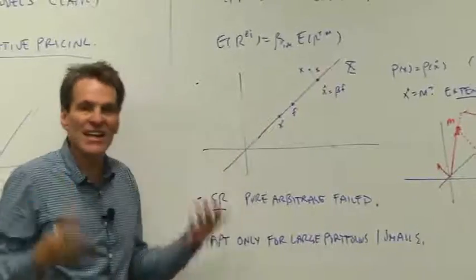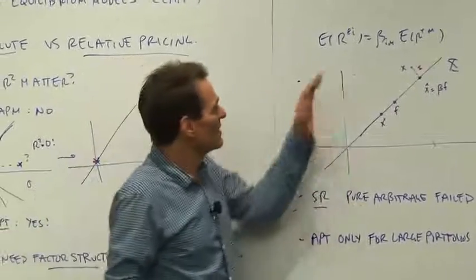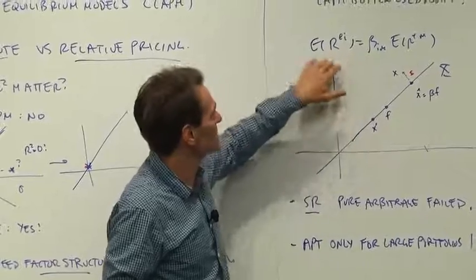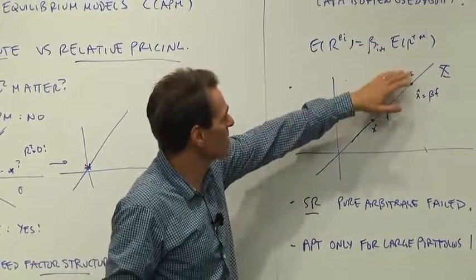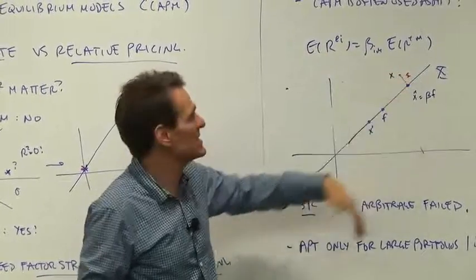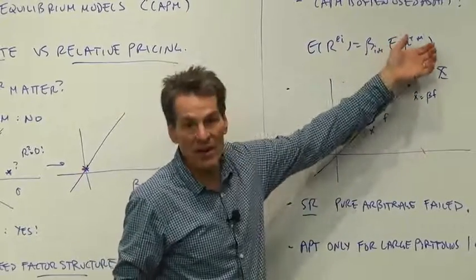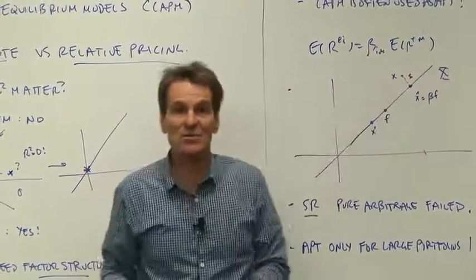I was using it as relative pricing. I was saying, well, the capital asset pricing model says expected return equals beta times the market. I found that for this case. So given that the market is reasonably priced, this thing seems reasonably priced.